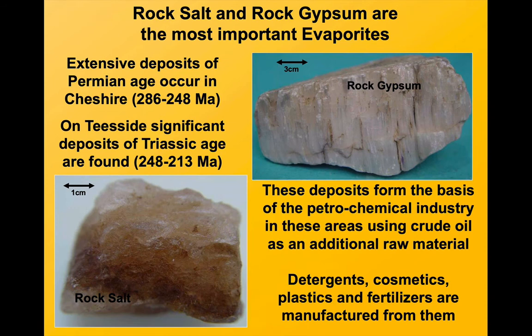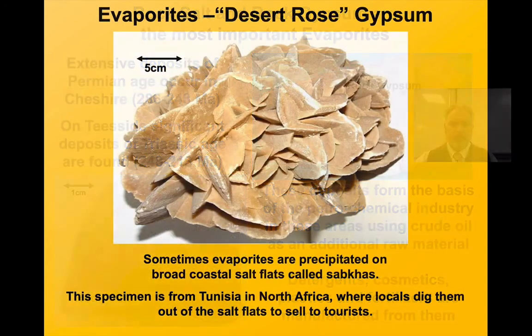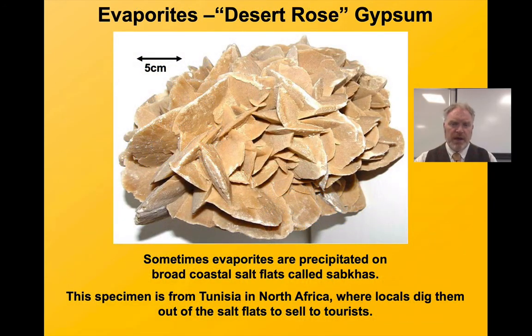So we find these evaporite deposits — formed by precipitation in places where desert lakes or even very shallow seas have dried up. They're really important resources, and we use these materials for quite a few different purposes. And you even get very beautiful ones, like these desert roses — this is gypsum precipitated in coastal salt flats. This particular one is from Tunisia.